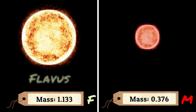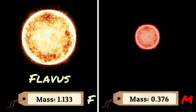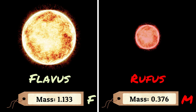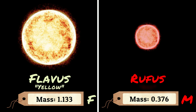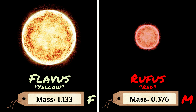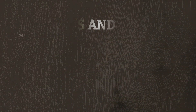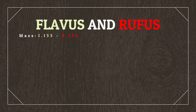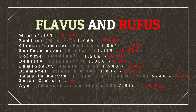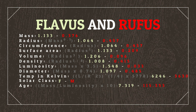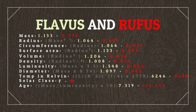Let's call the big one Flavus and the small one Rufus, Latin for yellow and red respectively, based on their colours. Just by determining the stars' masses, we're able to use some equations to determine lots of values comparative to our real-life Sun. Don't worry though — the spreadsheet in the description will do all of the maths for you.